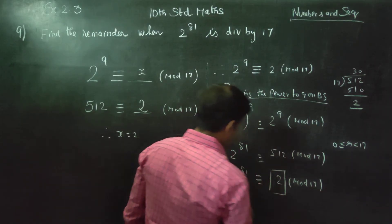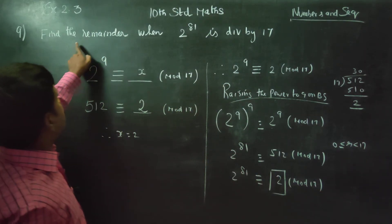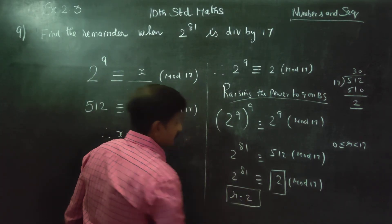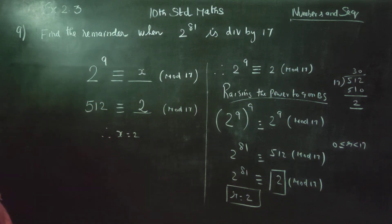Now we have finally found the answer. What is the remainder? Therefore, remainder is equal to 2. That is the answer. 2 power 81 divided by 17, remainder 2 is the answer.